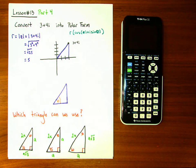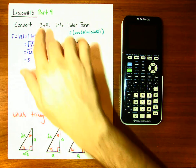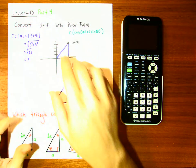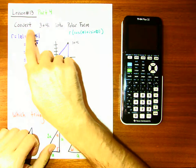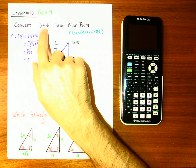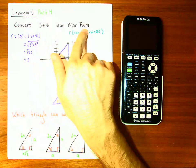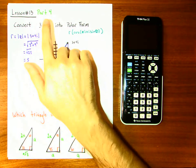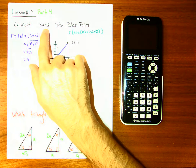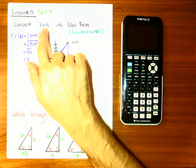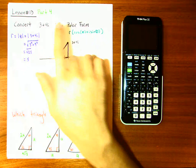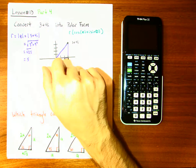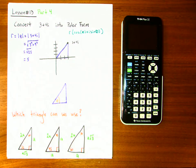Welcome to the final part of lesson 13 — this whole idea of converting complex numbers into polar form. I want you to take our favorite complex number, three plus four i, and put it into polar form. Try and do it by yourself.